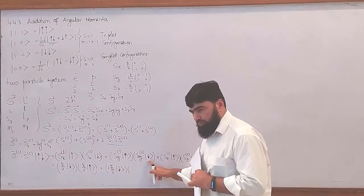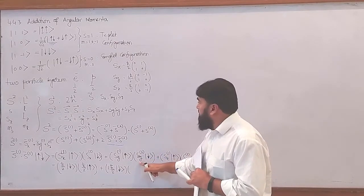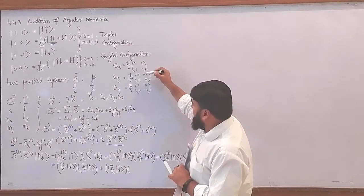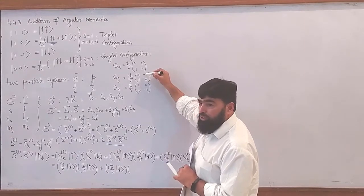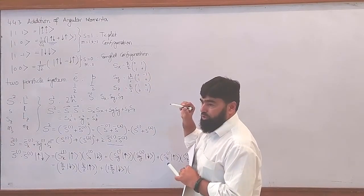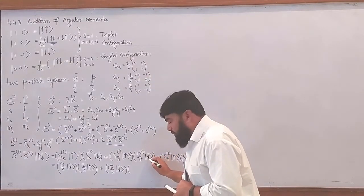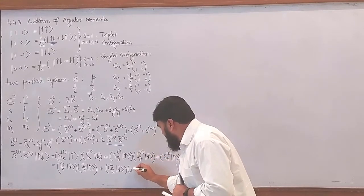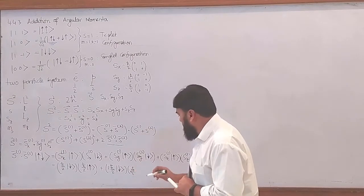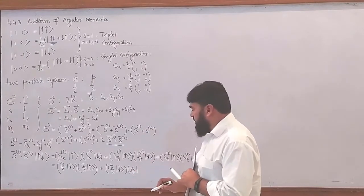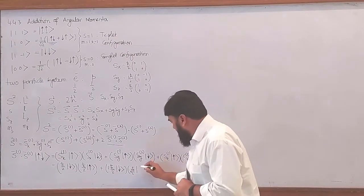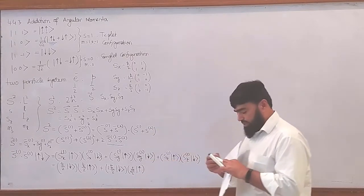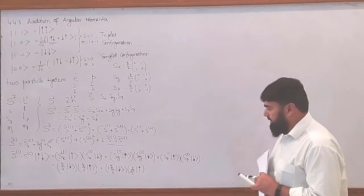Now it is spin-down and the y-component. Look here: there is no minus here, but here we are having one minus, so that minus will come out and it will keep it as spin-down. So it will become minus i·h-bar over 2, and for spin-down it will make it spin-up — so you will have to keep this in mind.